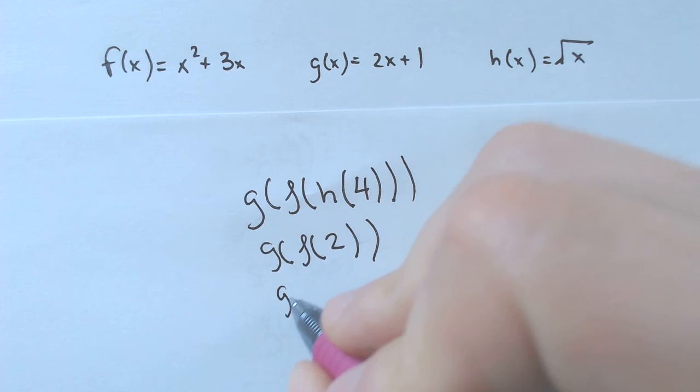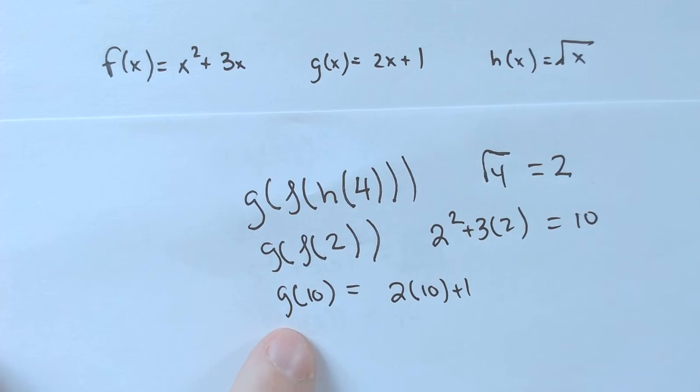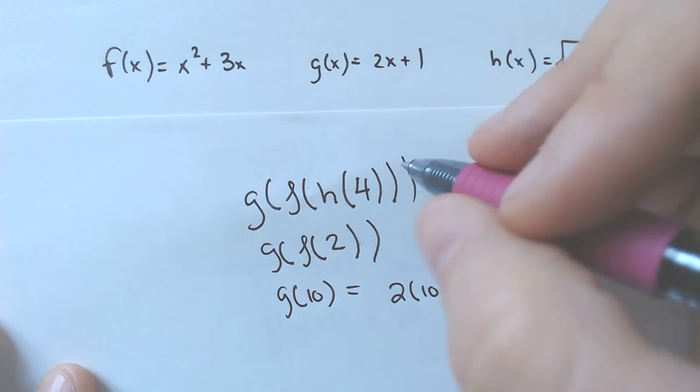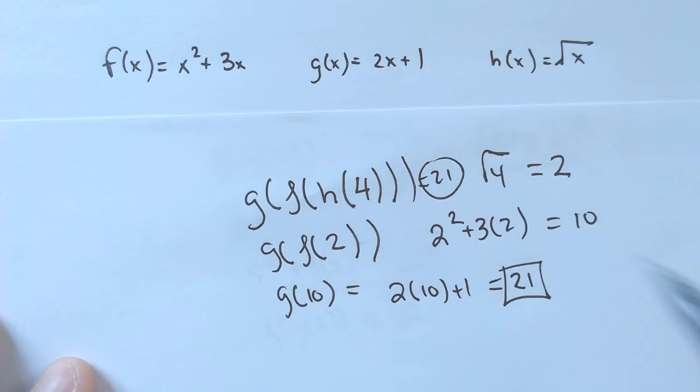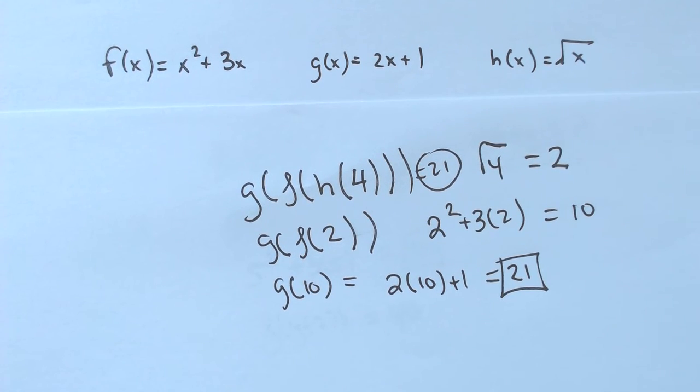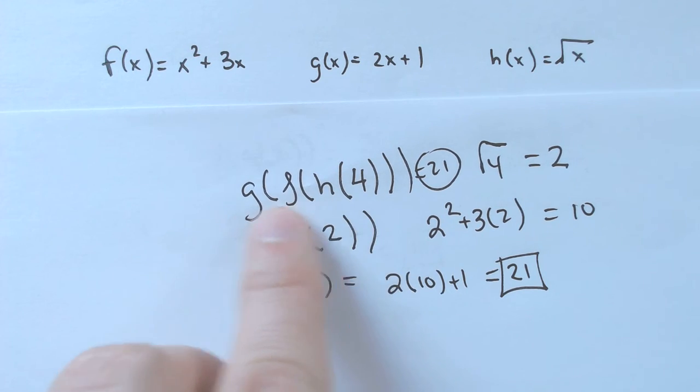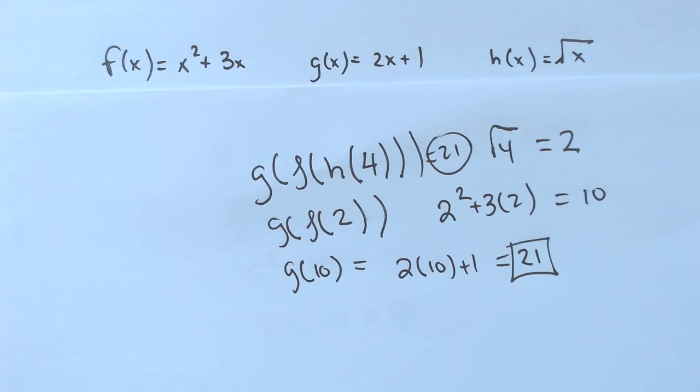And then I would finally have to figure out what is g of 10, which would be 2 times 10 plus 1, because we're plugging in 10 into g. And 2 times 10 plus 1 is 21. So that whole thing just equals 21. So it doesn't get much harder than that. You just take one number, you plug it in, and then you work your way down from the inside towards the outside as you go forward.